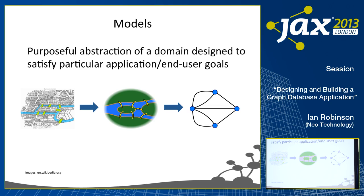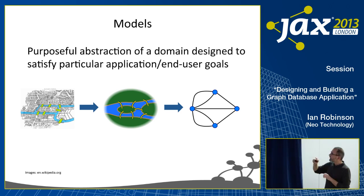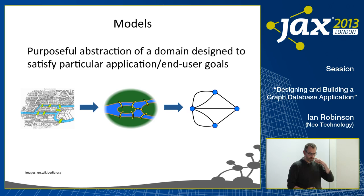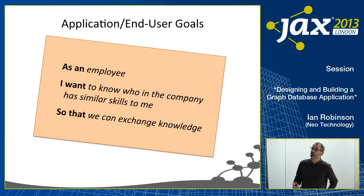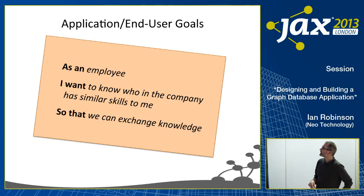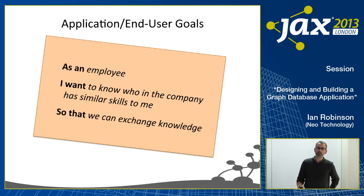That's exactly what we're trying to do — identify the salient points within our domain and remove all of the noise. So every model is motivated by a particular application goal or end user need. Typically, when I'm designing or developing a graph database application, I want to start by understanding what the problem is we're trying to solve, what those end user or application goals are. One of the ways we express those application goals is using an agile user story.